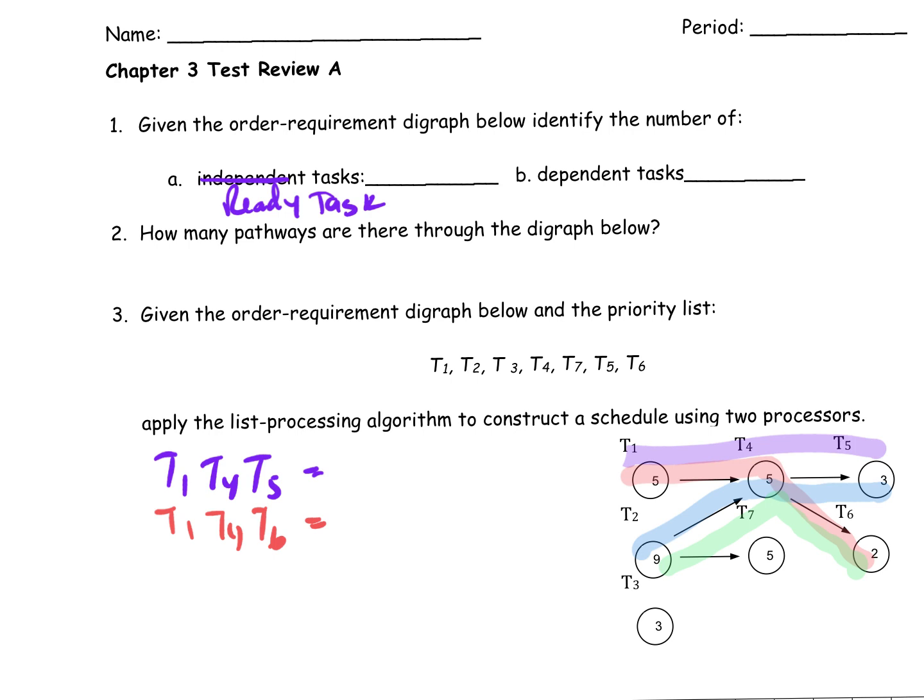It's ready to process. In this diagraph, I've got three ready tasks. So then how many of these tasks are dependent? Four. There are four left. So there's seven total. Your ready tasks and your independent tasks should add up to seven.